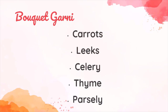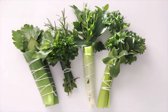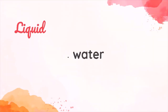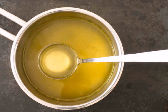Bouquet garni is a combination of fresh herbs and vegetables such as carrots, leeks, celery, thyme, and parsley stems that are tied in a bundle with butcher's twine. This bundle is added directly to the liquid and is allowed to simmer. The bouquet garni is removed before the stock is used in other foods. The liquid used in stocks is almost always in the form of water. It makes up the largest portion of stock. The liquid used to make a stock should be cold when you begin to cook, as this brings out the maximum flavor of the ingredients and prevents the stock from turning cloudy.